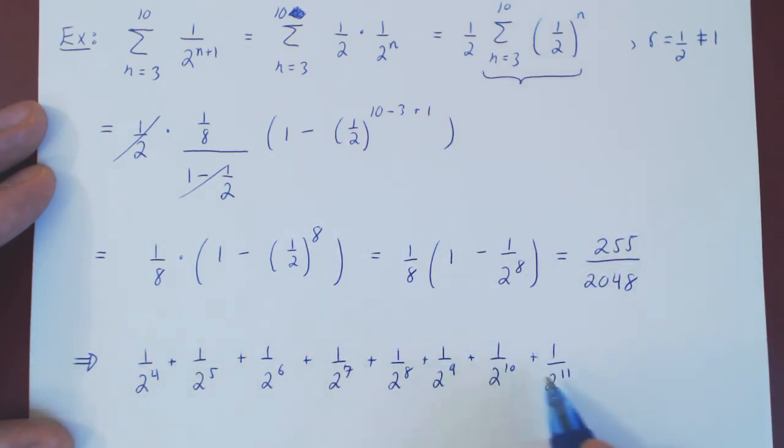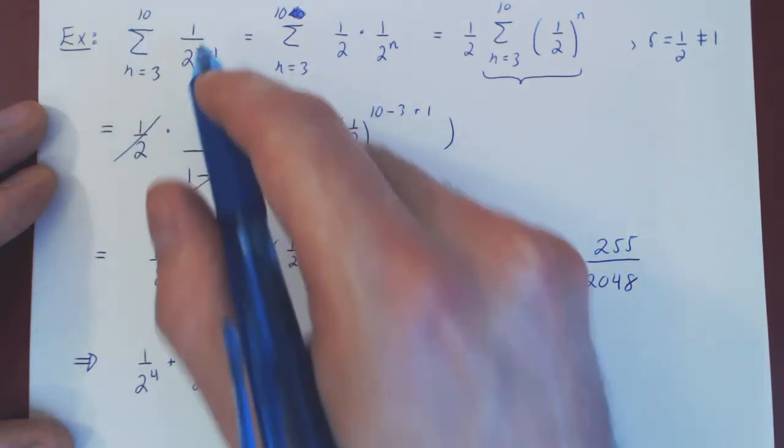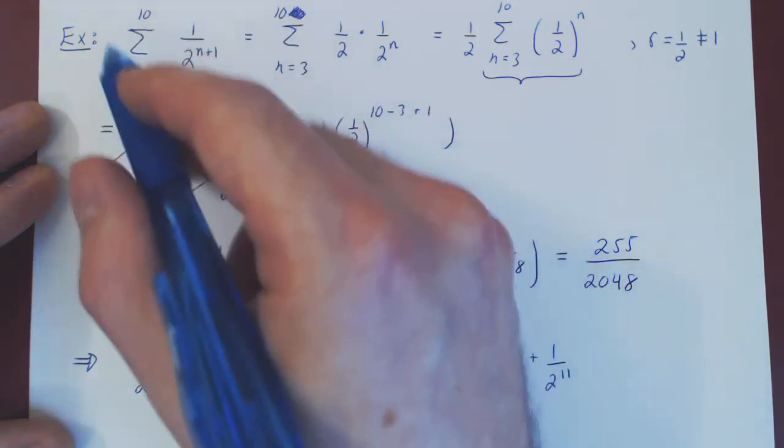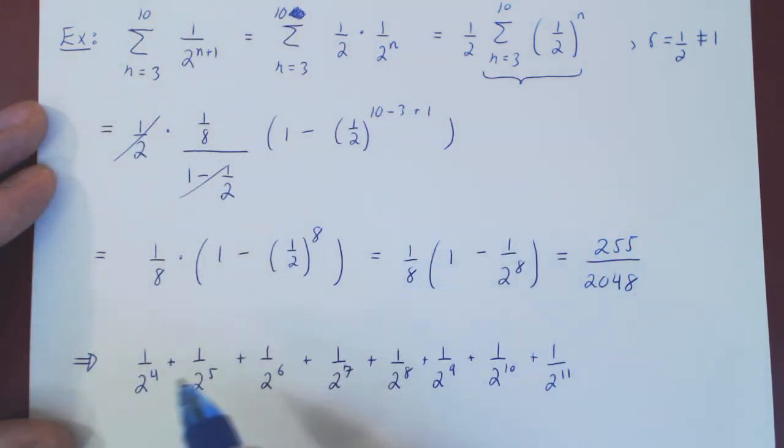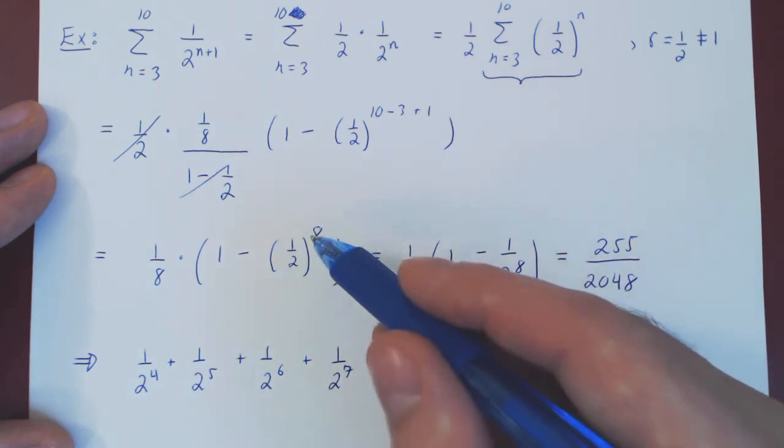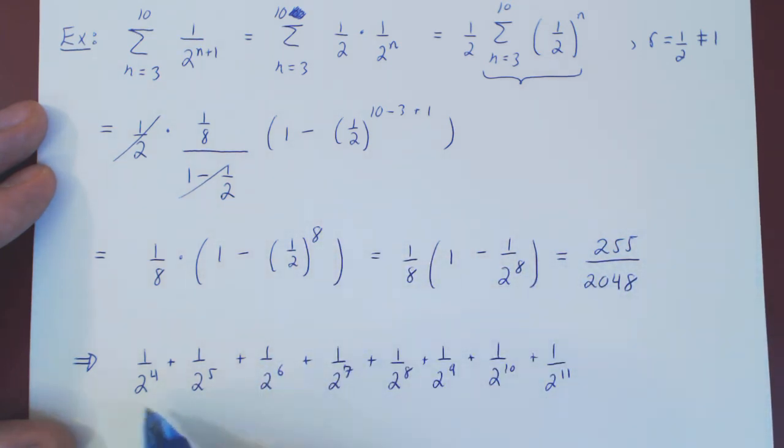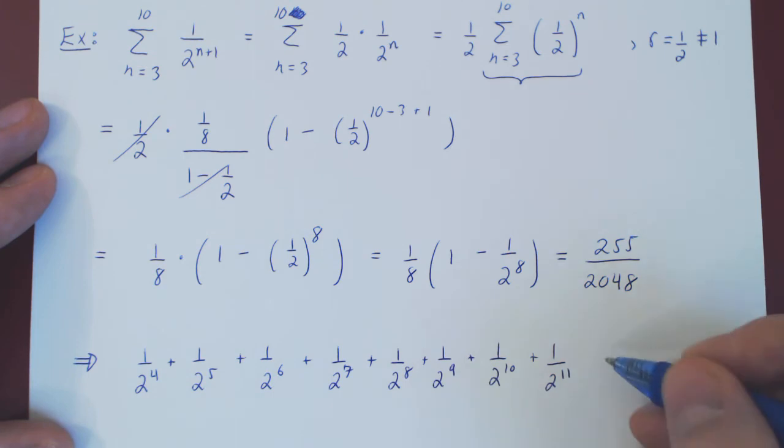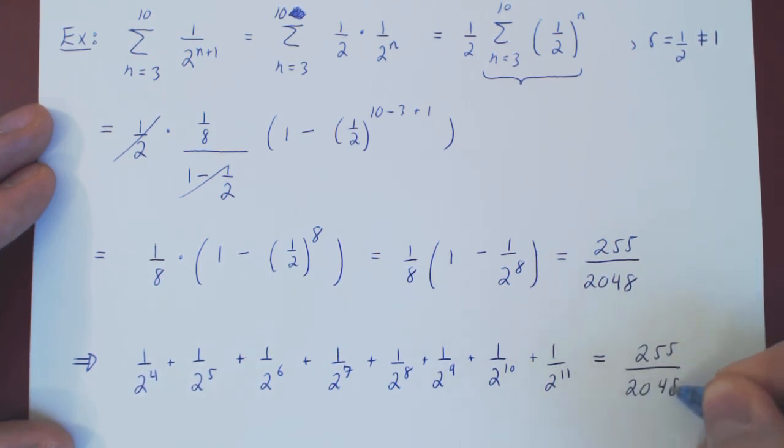So this is our geometric series, expanded up, or I should say geometric sum, as it's a finite sum, expanded out. And we can count that we do indeed have 8 terms: 1, 2, 3, 4, 5, 6, 7, 8. And we have just proved that the result of this sum is exactly as a single rational number, 255 over 2048.